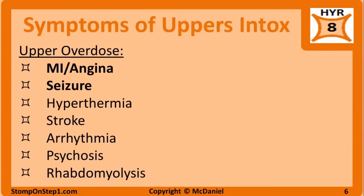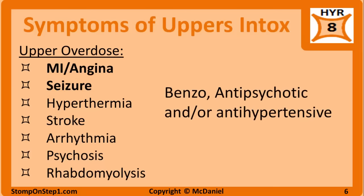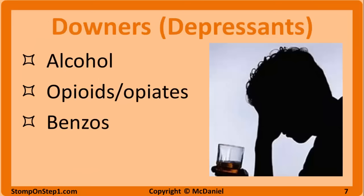Higher doses of these drugs result in overdose which can lead to MI or angina, seizure, hyperthermia, stroke, arrhythmias, psychosis, rhabdomyolysis, or sudden death. Treatment for acute intoxication often includes the combination of benzodiazepines, antihypertensives, and/or antipsychotics. Withdrawal from uppers usually doesn't show up on exams, but it presents with a crash following drug cessation. It is generally not life-threatening and presents with fatigue, depression, irritability, and psychomotor retardation.